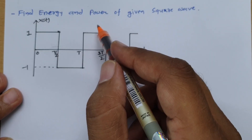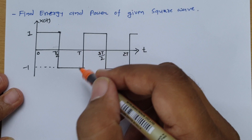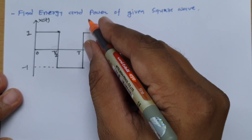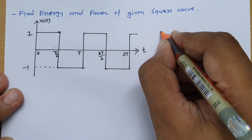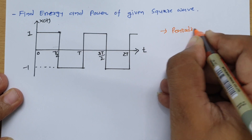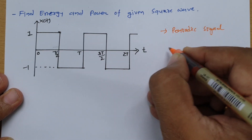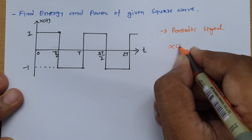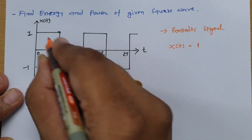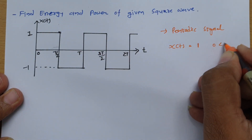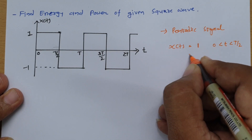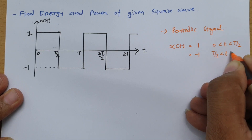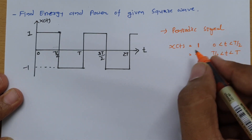For a periodic signal, we should first calculate power. Before that, let me define this signal: it is periodic with period T, where x(t) = 1 for 0 to T/2, and x(t) = −1 from T/2 to T.